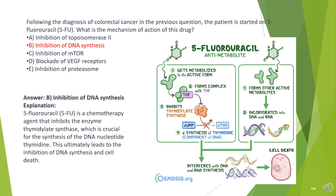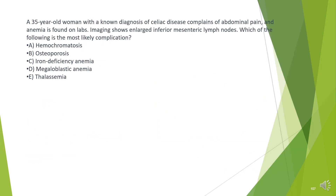The answer is B. Inhibition of DNA synthesis. 5-fluorouracil is a chemotherapy agent that inhibits the enzyme thymidylate synthase, which is crucial for the synthesis of the DNA nucleotide thymidine. This ultimately leads to inhibition of DNA synthesis and cell death.